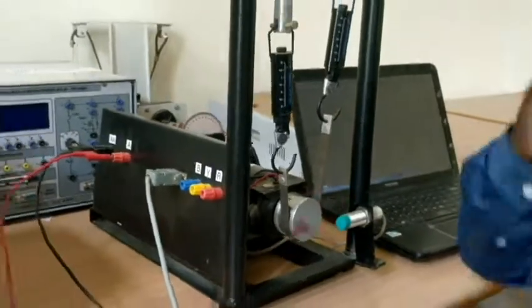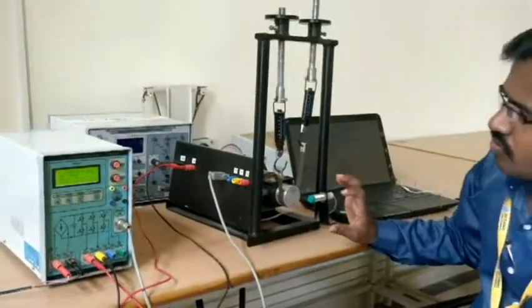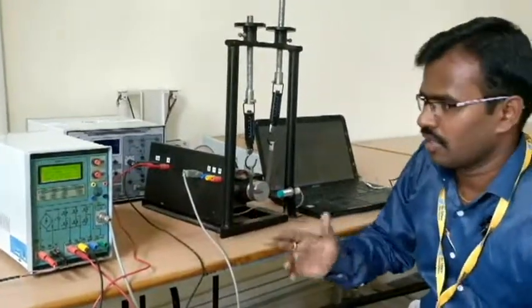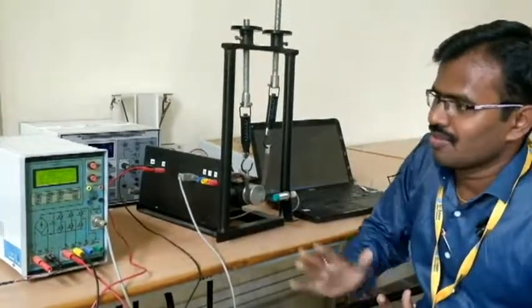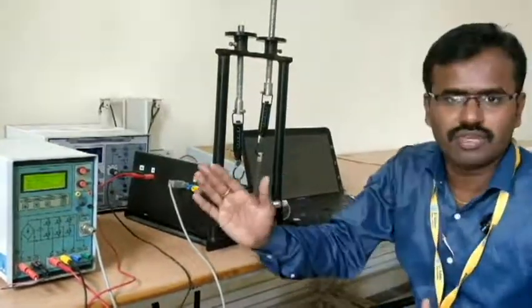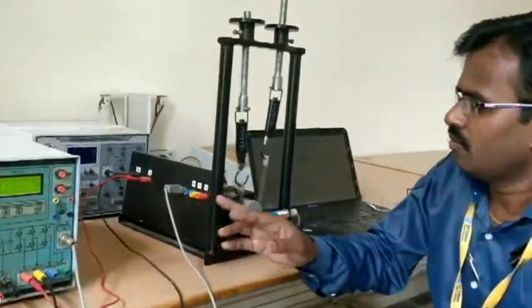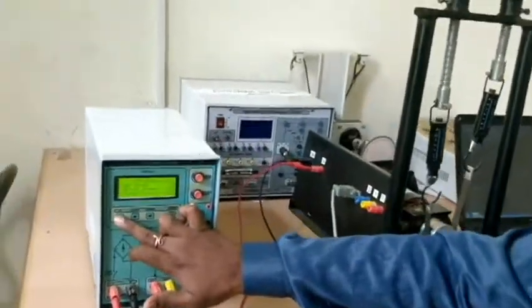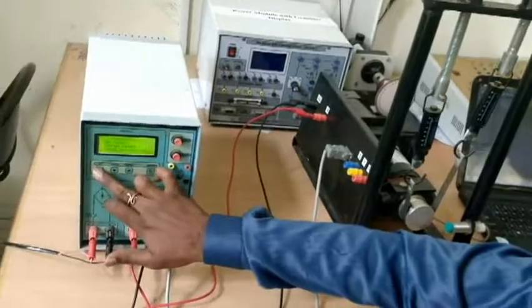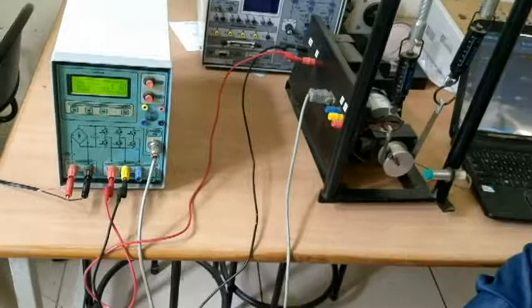This system is giving feedback to this controller. The speed of this shaft is 400 or 300. Now this system is going to balance this actual value and this set value. Finally the system will balance and it will reach. Now it is trying to balance.